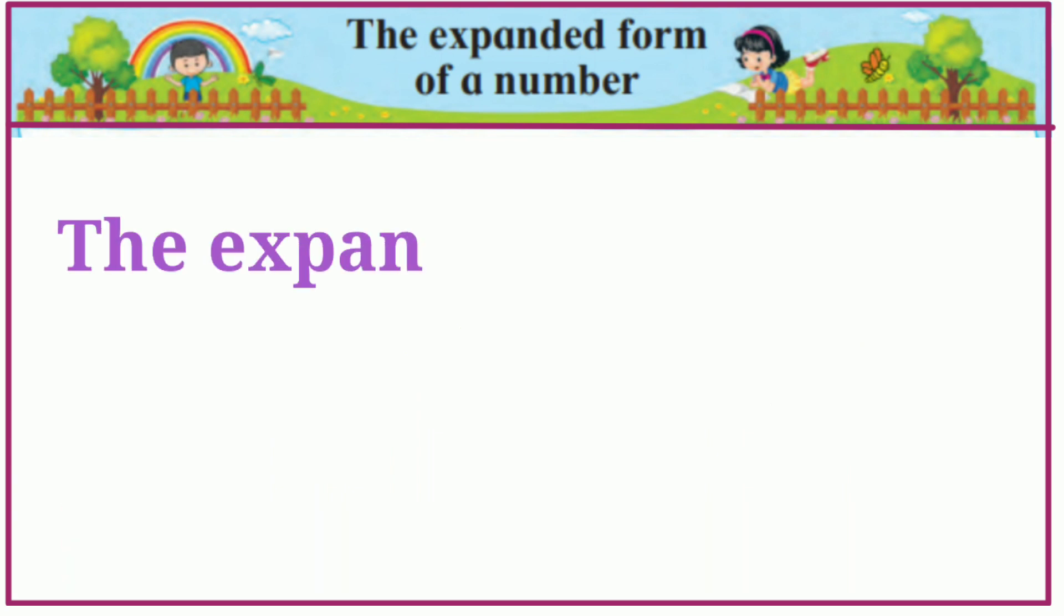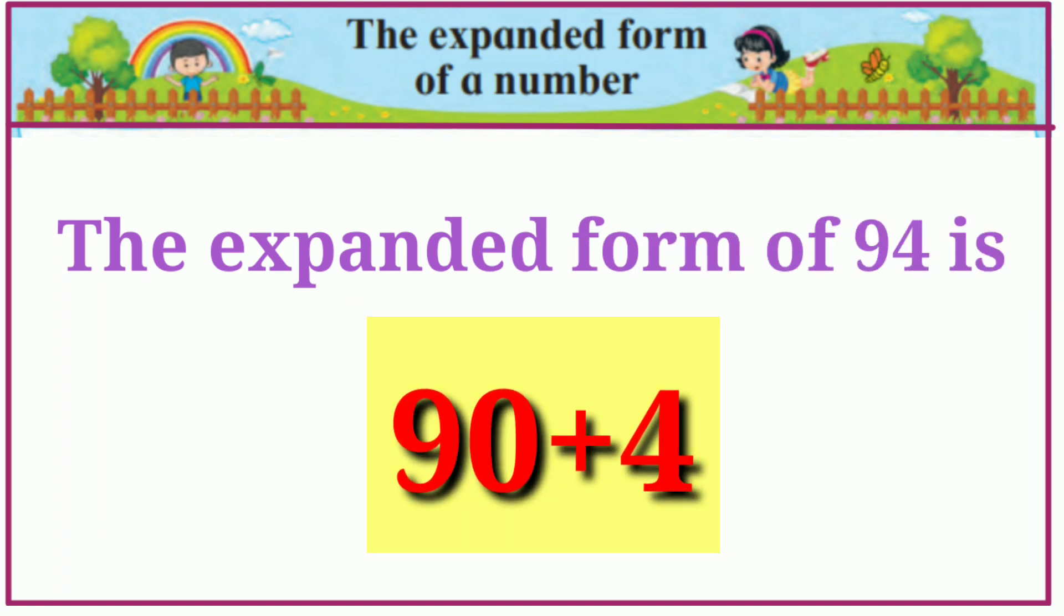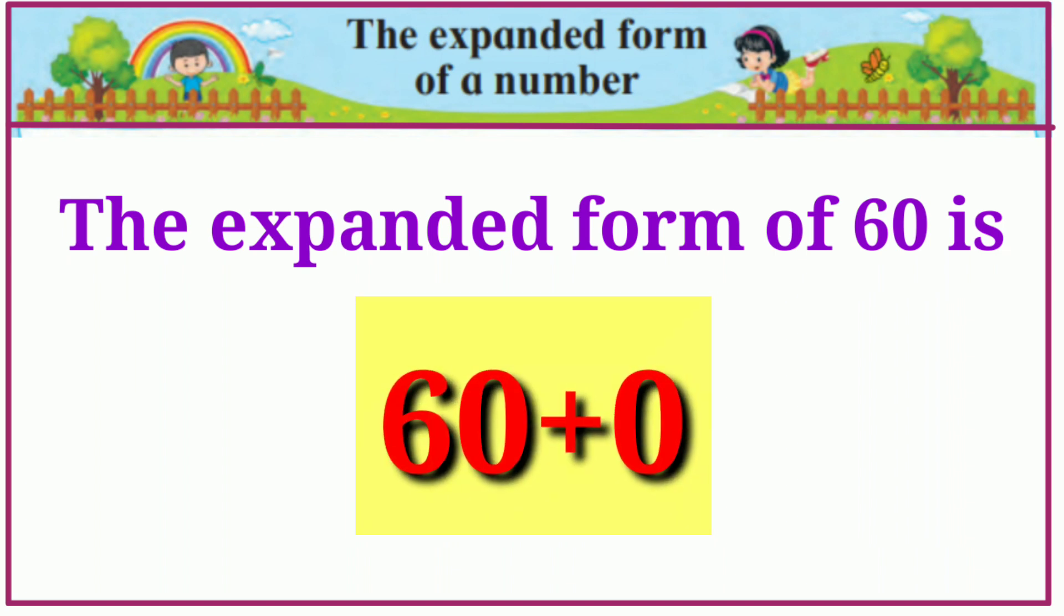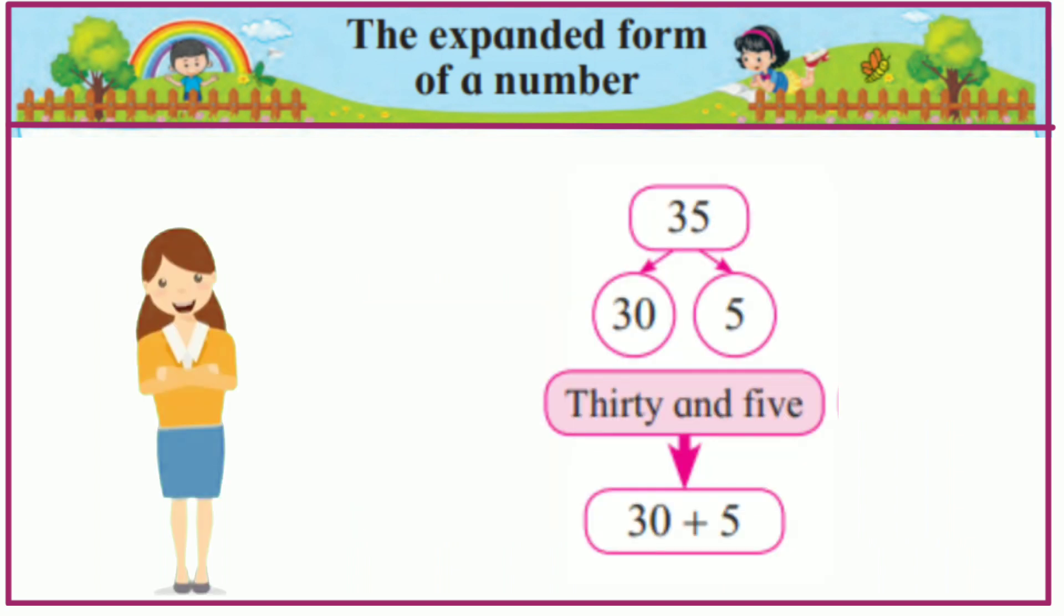The expanded form of 94 is 90 plus 4. The expanded form of 60 is 60 plus 0. Let us study some more examples.